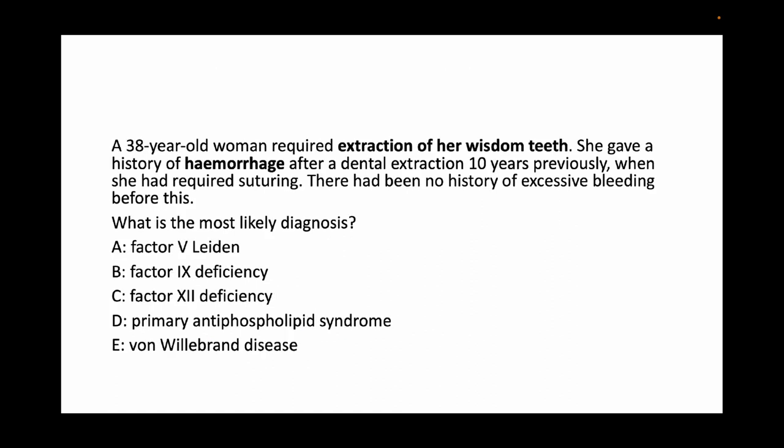An example from haematology — again a very famous classic MRCP-style question. A 30-year-old woman has gone for dental extraction. She has a history of haemorrhage with dental extraction 10 years previously that required suturing. This is von Willebrand disease.